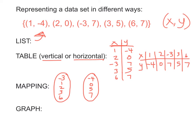The mapping works by drawing an arrow from each input to its matching output. So for the point 1, negative 4, we draw an arrow from 1 to negative 4. Then from 2 to 0. Then negative 3 to 7. From 3 to 5. And lastly from 6 to 7. And that is a mapping — you will see that on the next screen as well.